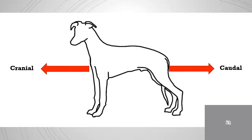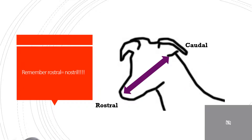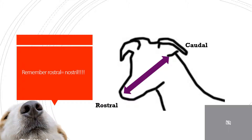Here we can see the arrows depicting cranial and caudal aspects of the body. And here we can see the rostral aspect and the caudal aspect. You can help to remember rostral by remembering the term nostril.